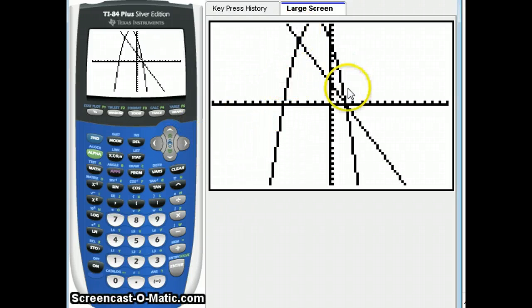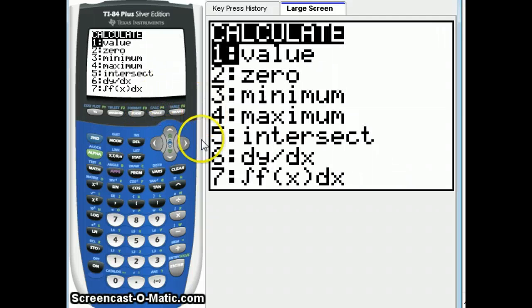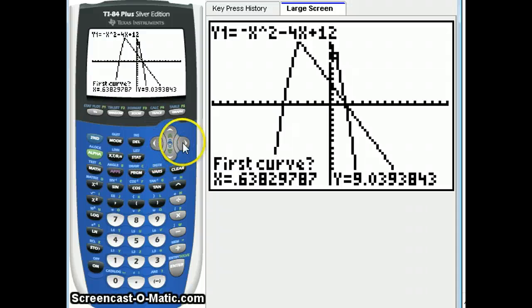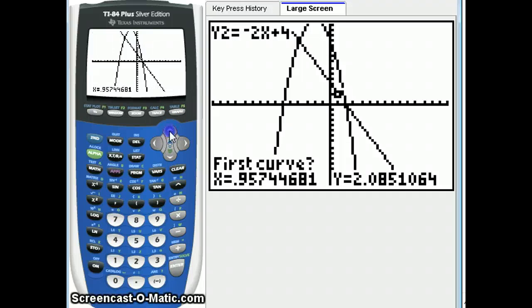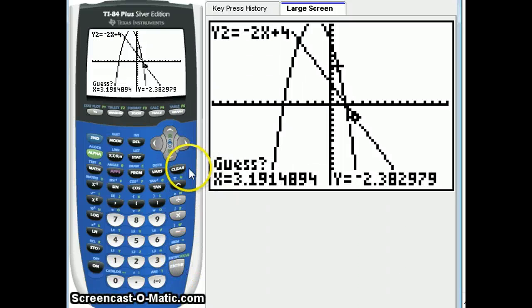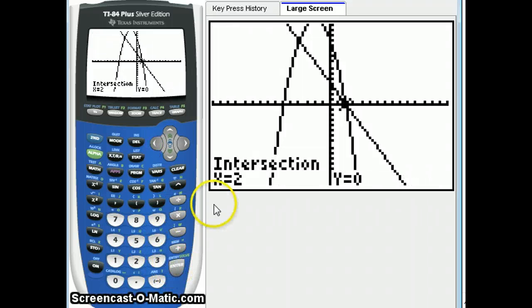Graph that. Now we can see these two intersection points. Actually, calculating the intersection points is possible. You push second and trace, which is calculate. And choice 5 is intersect. And they're asking about my curves. Now, if you push left and right with the arrows, it moves along a curve. But if you push up and down, it switches between the curves. So first curve will be the parabola. Second curve, it switches already to another curve. So that's my other curve. Hit enter. And it says guess. To do this, you use the left arrow to move near the intersection. And you hit enter. And it tells you our one intersection is 2, 0.